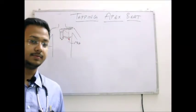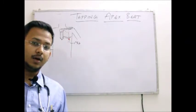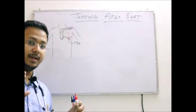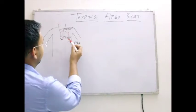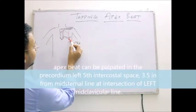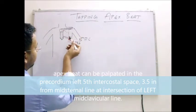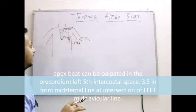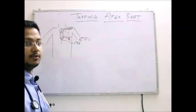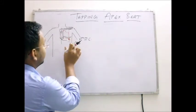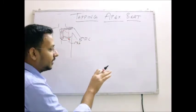Hello friends, welcome to the Clinical Pulse. Today we are going to discuss the tapping apex beat. Before discussing tapping apex beat, we must know what the apex beat is. The apex beat is located and palpated on the precordium at the fifth intercostal space, intersecting at the mid-clavicular line. You may take an average distance from the mid-sternal line as 3.5 inches. The maximal transmission of impulse from the left ventricle during each beat is projected at this place.